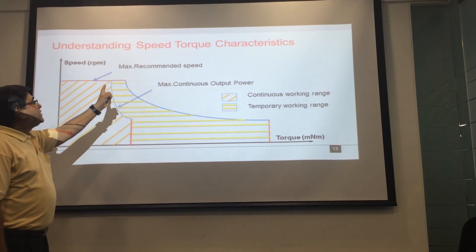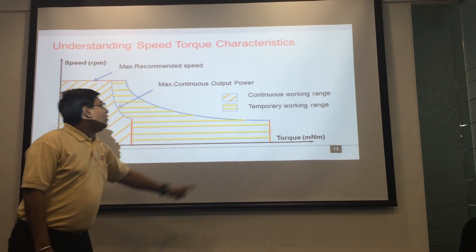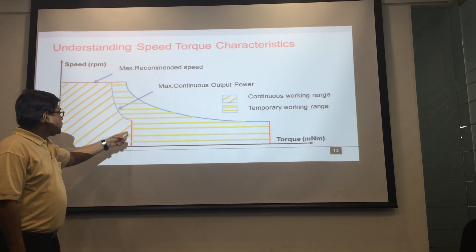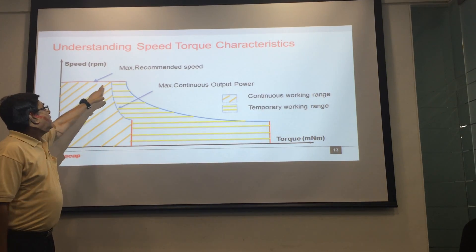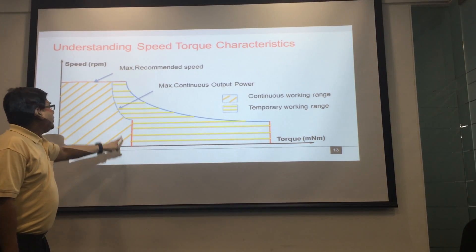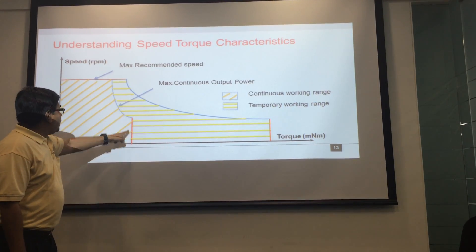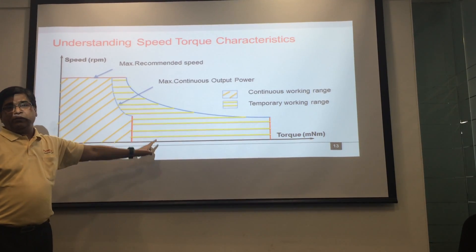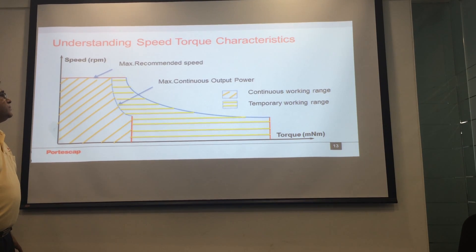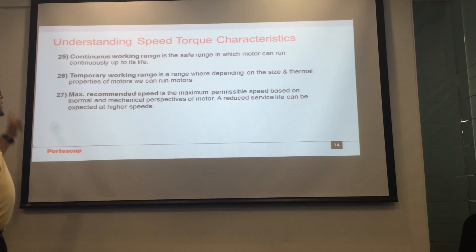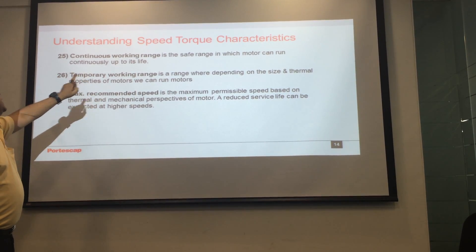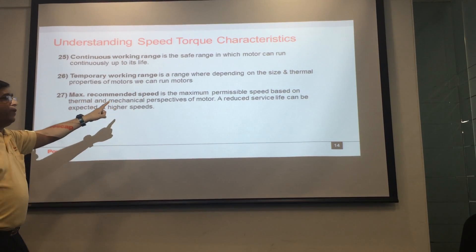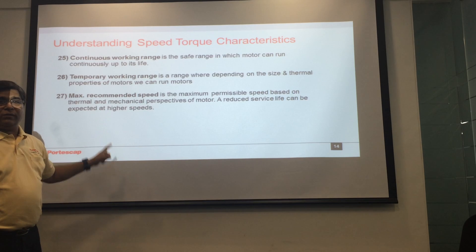Now we come to the last slide — the speed torque curve of the motor. It shows the maximum limit of the motor: the maximum continuous torque range and the maximum permissible speed. This is the recommended working range or continuous working range, and this is the temporary working range. This depends on the thermal capability of the motor. There is a continuous working range, a temporary working range, and a maximum recommended speed defined by the mechanical design of the motor.